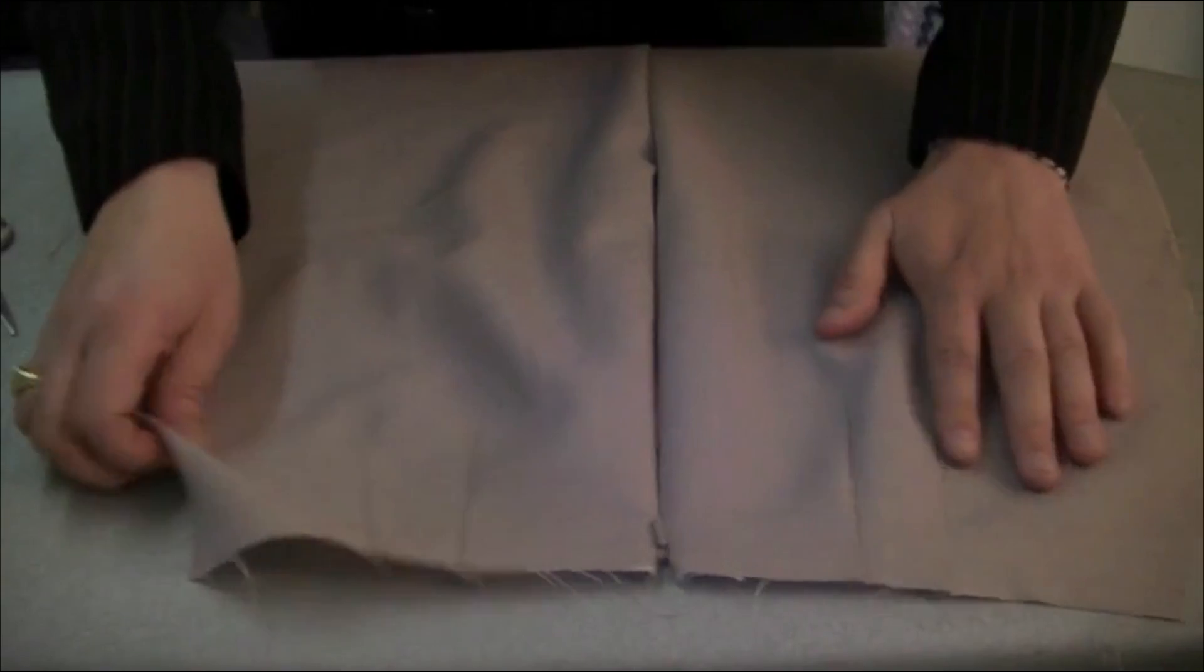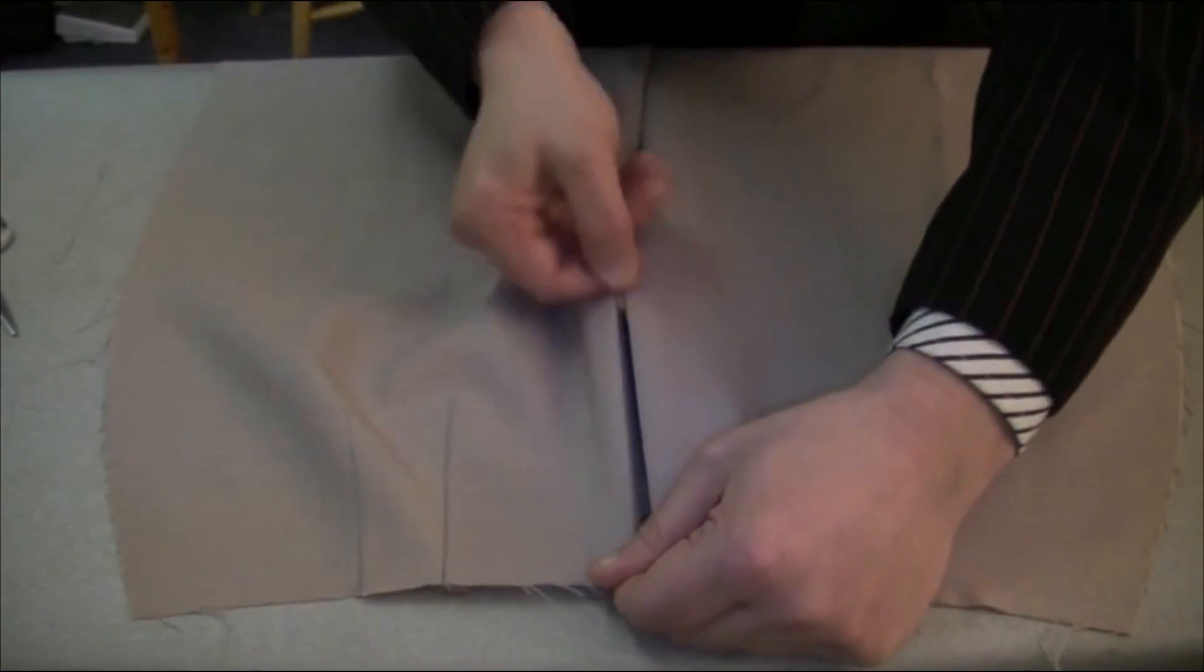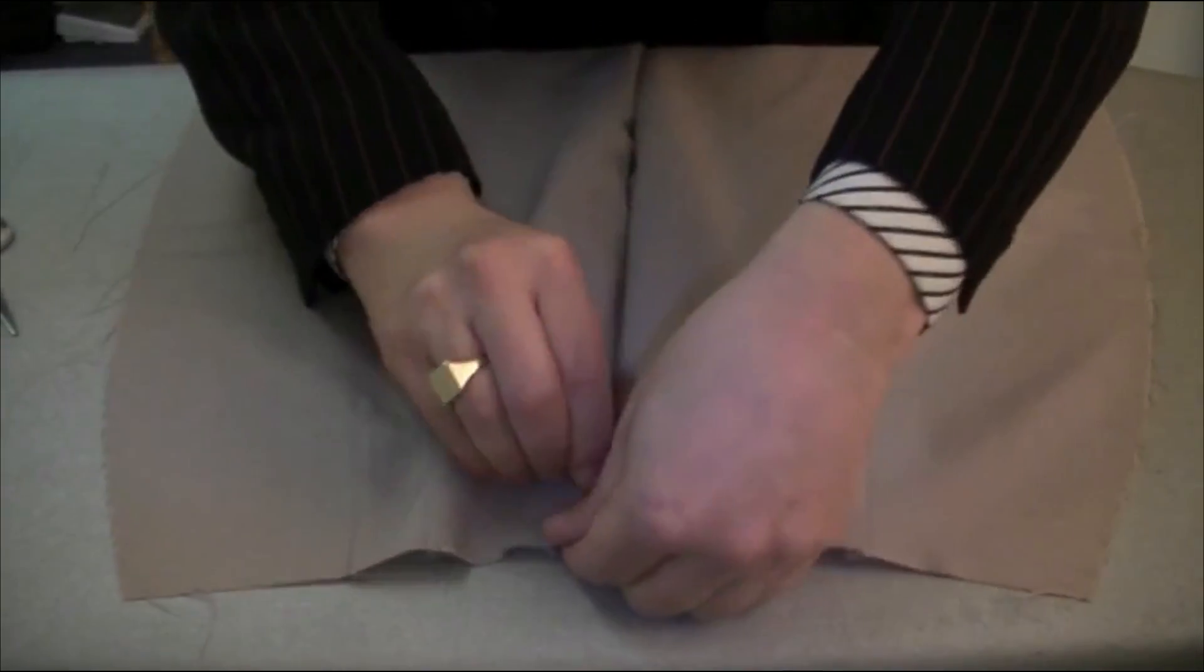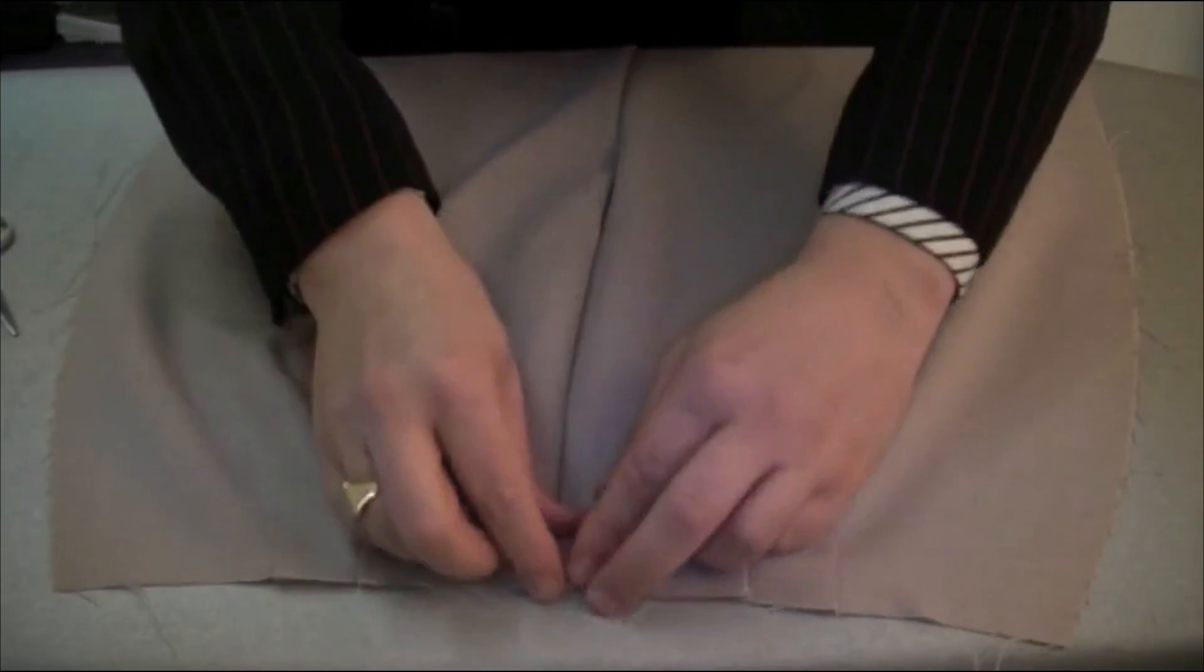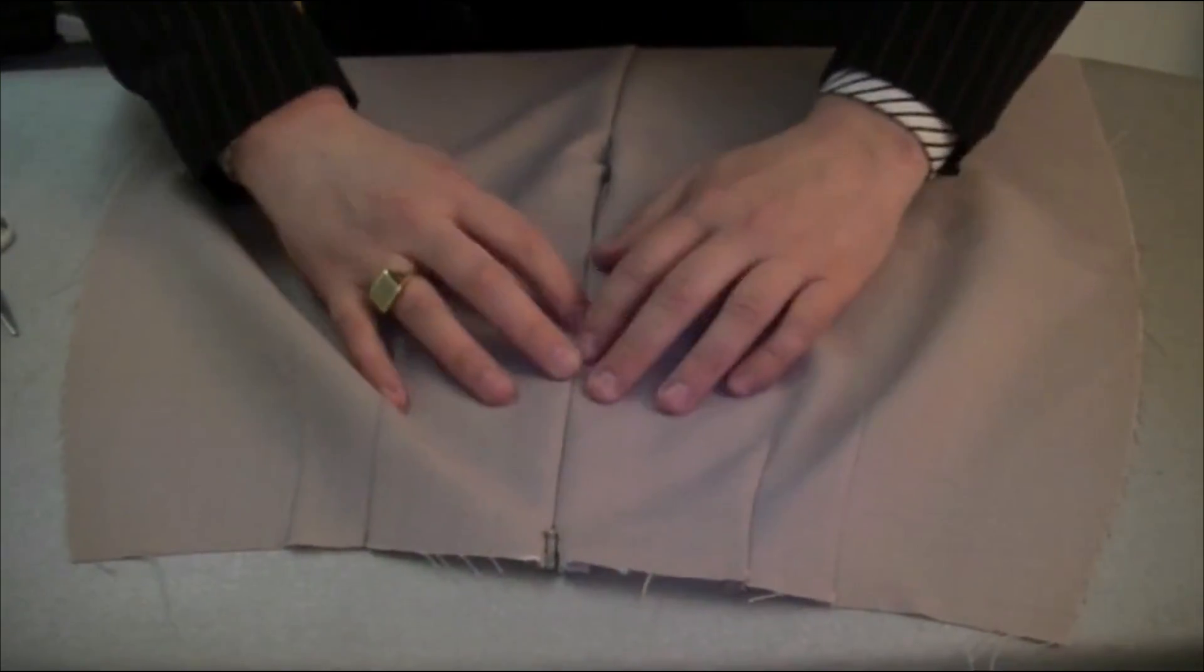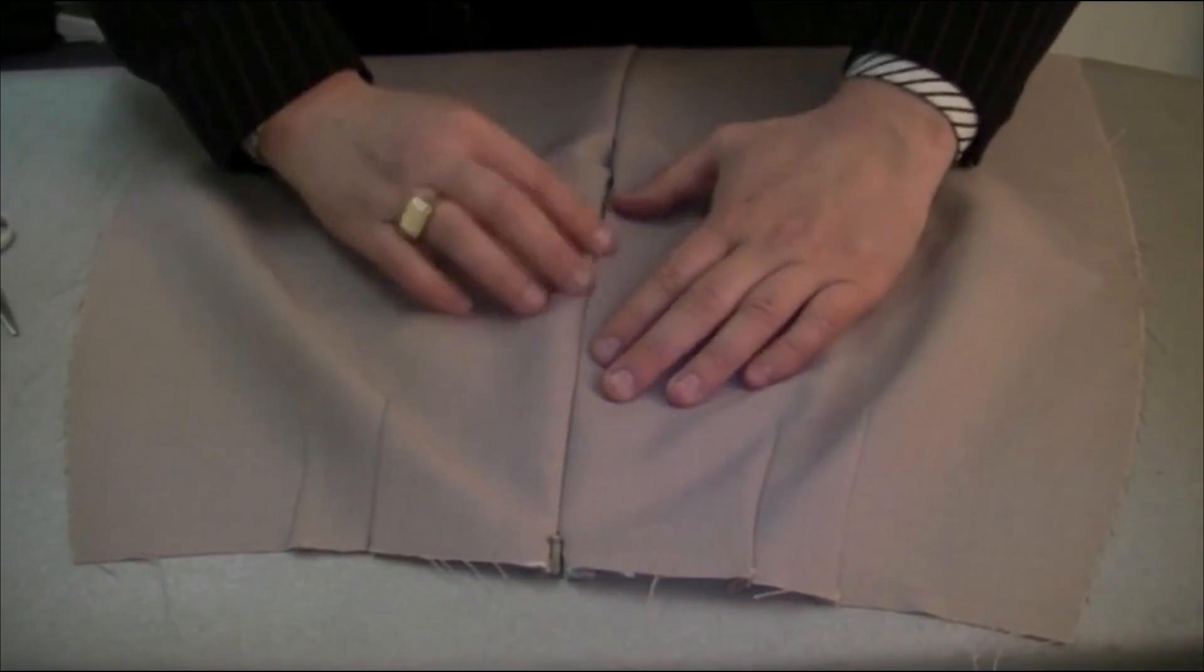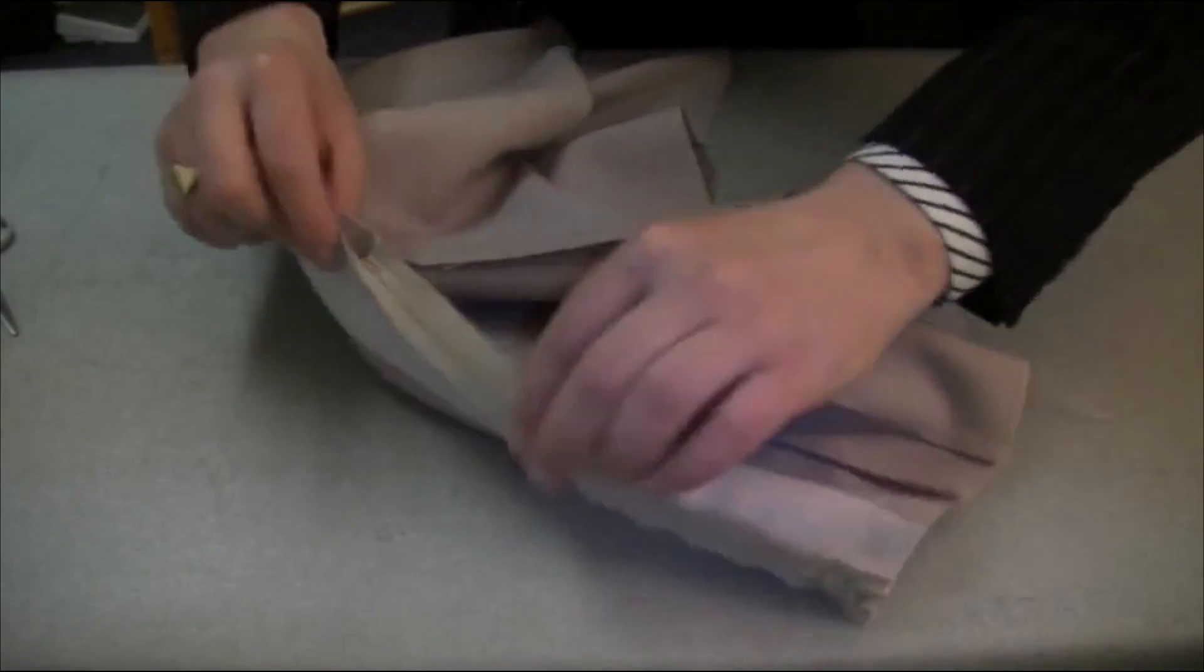So when you've attached the concealed zip in, just open the zip and just keep opening and closing it a few times to make sure that it's free of all stitches and that it hasn't gone over and it's getting stopped anywhere at all. So if you're happy with that, then what you do...